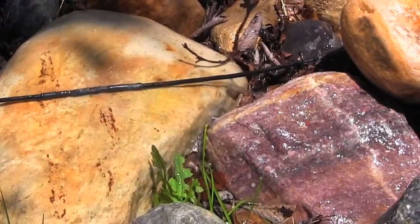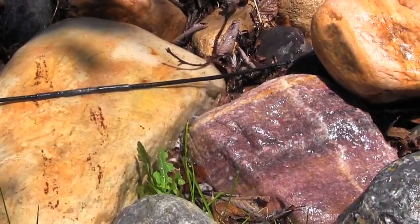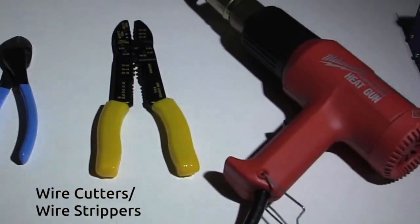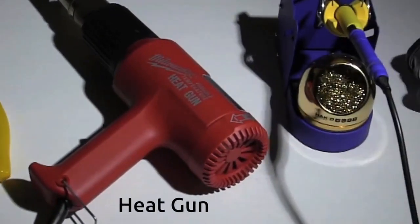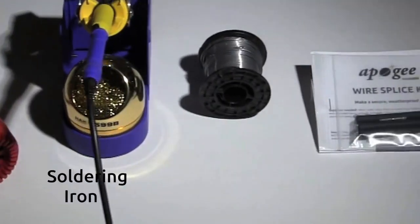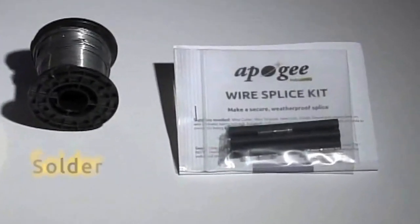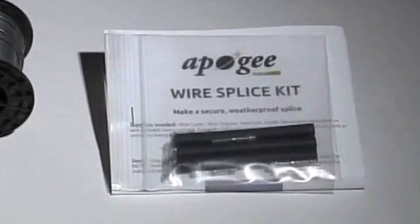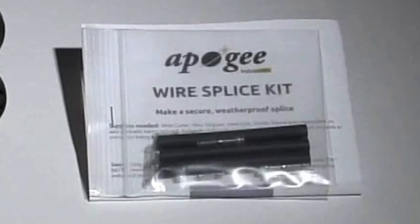Before you begin, please gather these supplies: wire cutters, wire strippers, a heat gun, a soldering iron and solder, and an Apogee wire splice kit, which includes solder sleeves and polyolefin adhesive lined heat shrink.